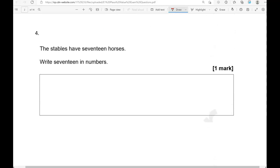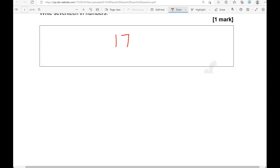The stables have 17 horses. Write 17 in numbers. So again, the 1 and the 7, that makes 17, which is 10 add 7, 17 in total.